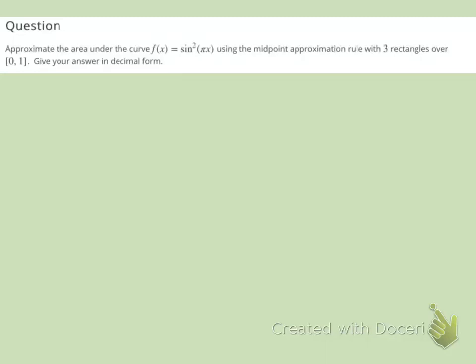This is practice problem number five for this section, and we have the curve f(x) equals sin²(πx), and we're going to use a midpoint approximation with three rectangles over the interval from zero to one.